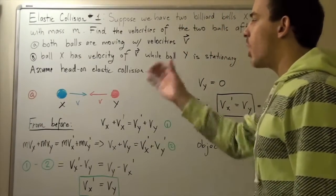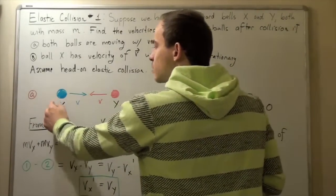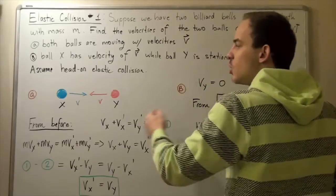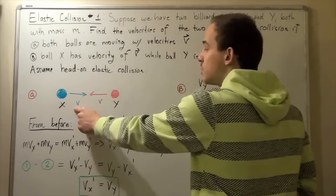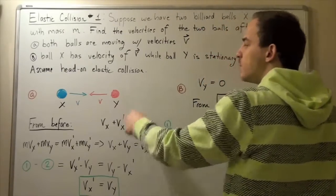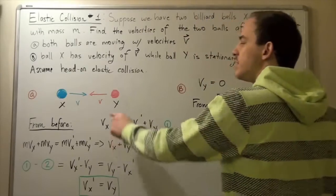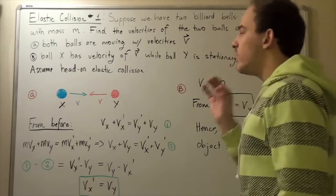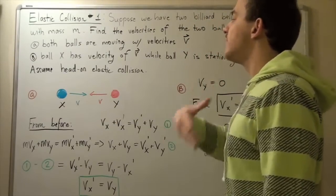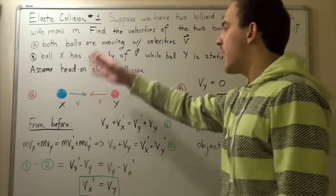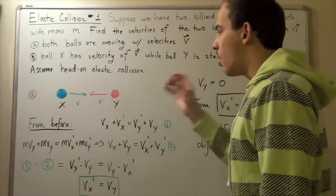Let's draw our diagram. In part A, we have ball X which is moving in this direction with a velocity that has a magnitude of v, and ball Y is moving in this direction with that same magnitude of velocity. Now we want to find what the final velocities are of ball X and ball Y.